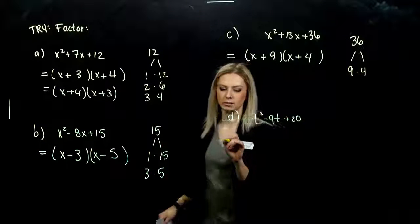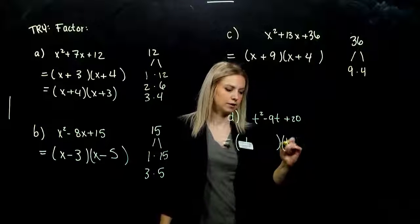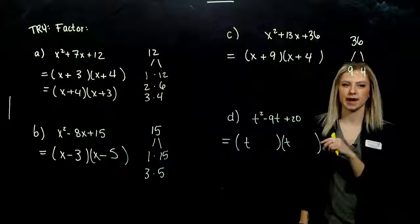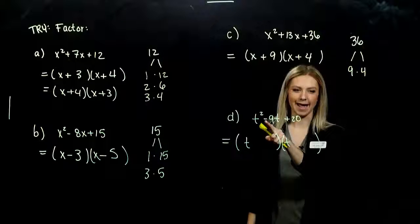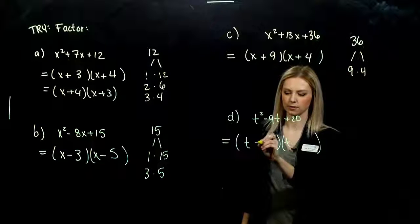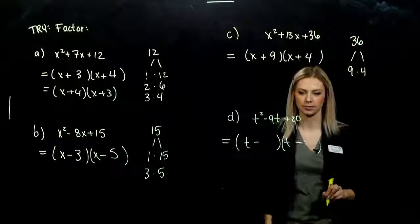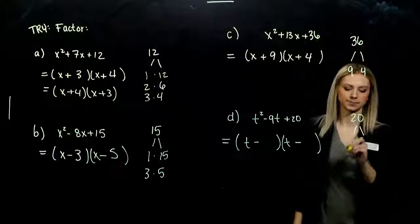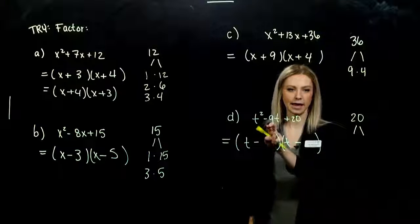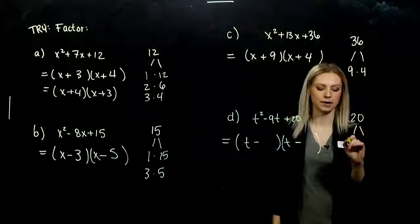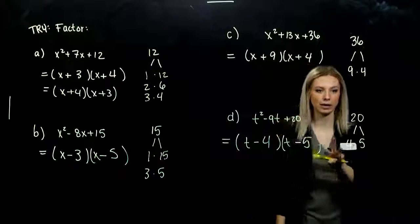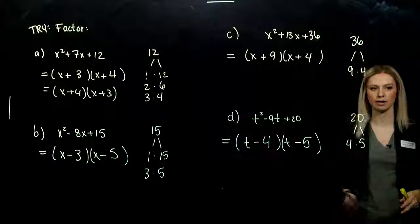Last one — we're dealing with t's. I've got a 1 out on the front, so it's going to be t and t. We need it to add to be negative and multiply to be positive, so both signs are going to be negative. How do we break up 20 into factors that multiply to 20 and add to negative 9? That's 4 and 5. And the order doesn't matter — we can FOIL it out and check.